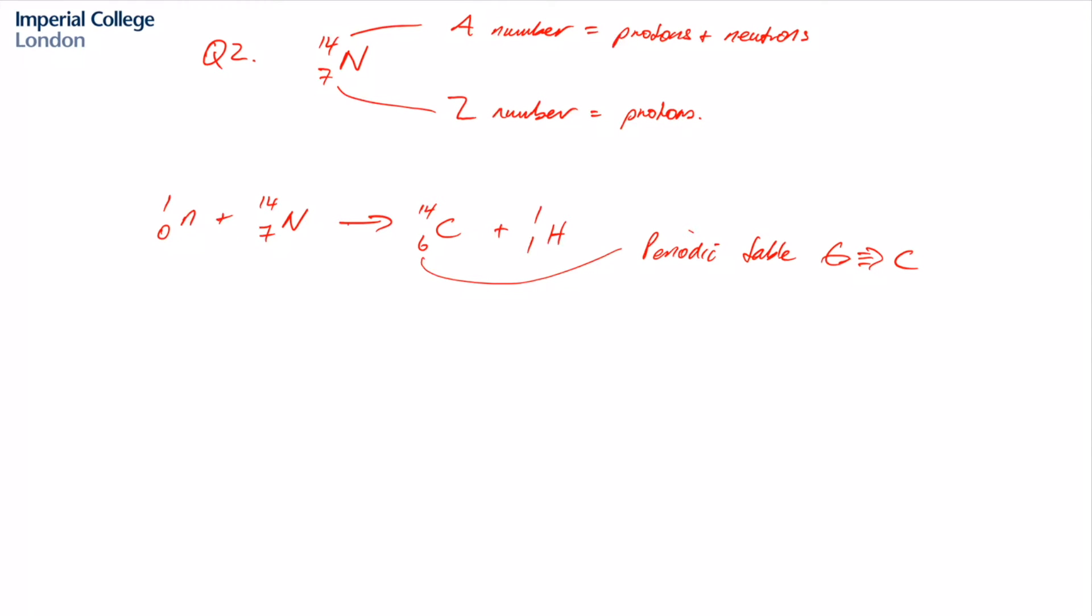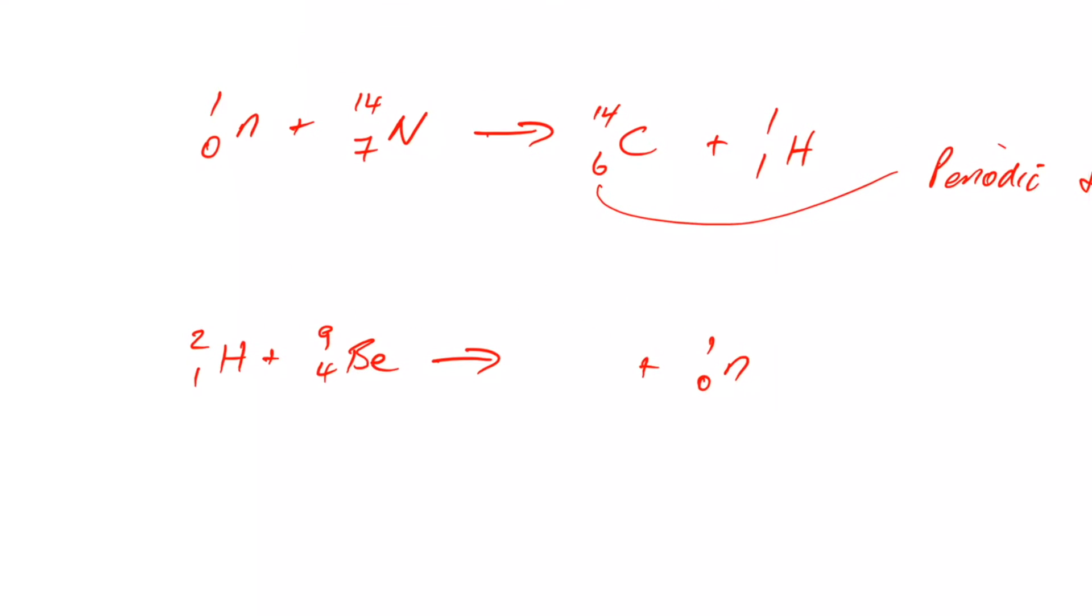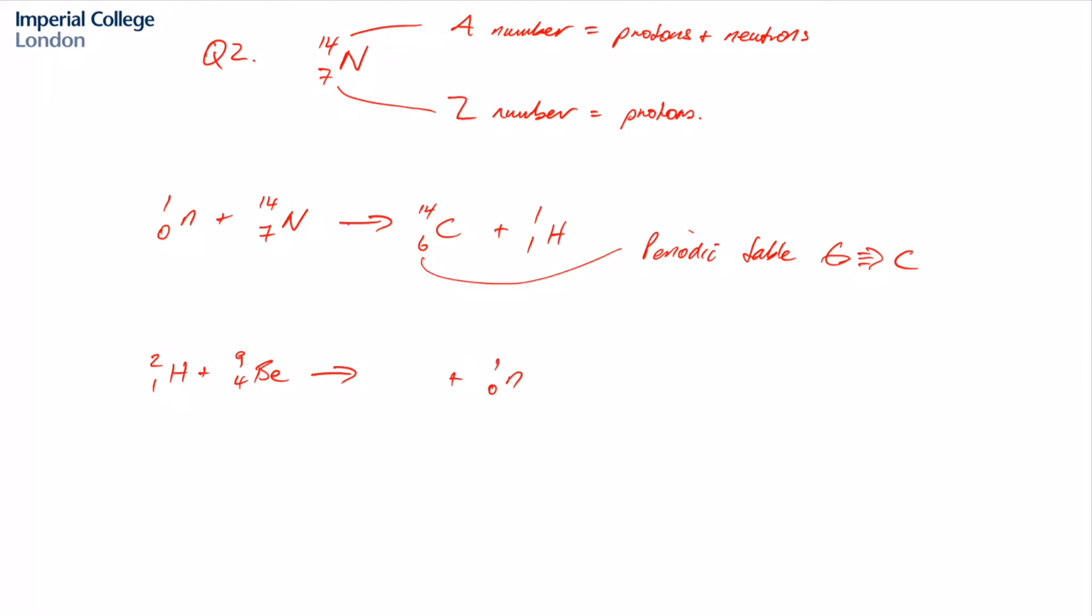And likewise for our second equation, we have 2,1, hydrogen, plus 9,4, beryllium, gives something plus a neutron. So balancing our A numbers across the top, we have 2 plus 9 is 11, so this must be 10, plus 1 is 11. And 1 plus 4 is 5, so this must be 5 here. So again, looking on a periodic table to see what element corresponds to a Z number 5, the answer is boron.